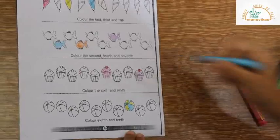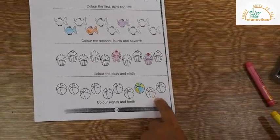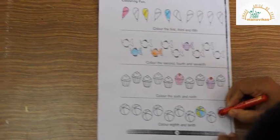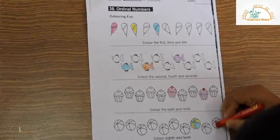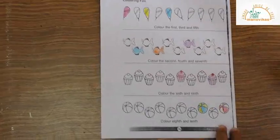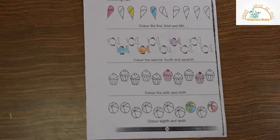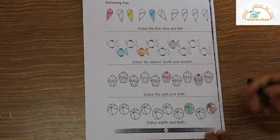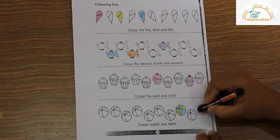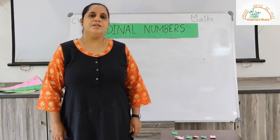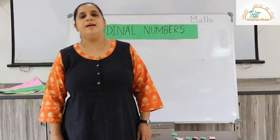You can use colors of your choice. So the eighth, ninth and tenth football — we will color the tenth football. So we are done with the worksheet. Children, with this we end our lesson for today. Thank you. Have a nice day.